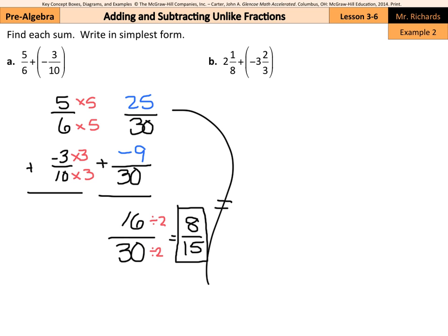So, 2 times 8 is 16, plus 1 is 17 eighths, plus 3 times 3 is 9, plus 2 is 11 thirds. But that's a negative, so it'll be a negative 11 thirds.